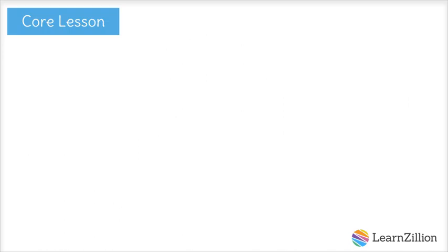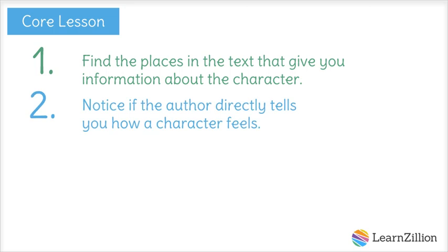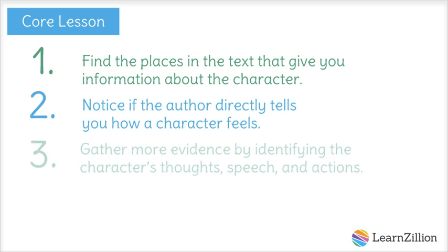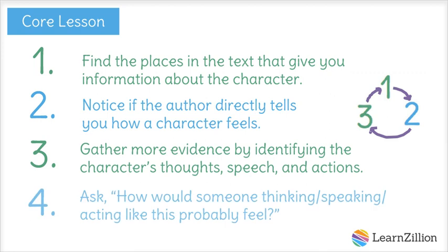In our lesson, we're going to follow four steps. First, we'll find the places in the text that give you information about the character. Next, we'll notice if the author directly tells you how a character feels. Third, we'll gather more information by identifying the character's thoughts, speech, and actions. It's important that we keep doing steps one through three until we have several pieces of evidence. Finally, we'll ask, how would somebody thinking, speaking, and acting like this probably feel?